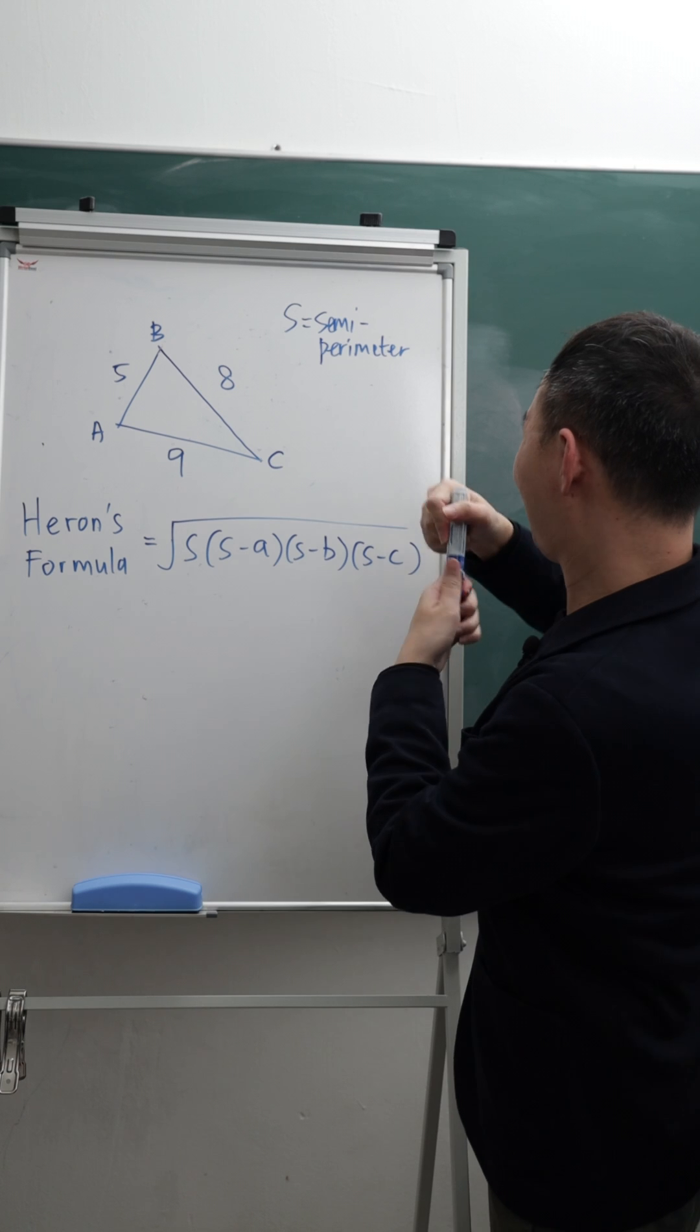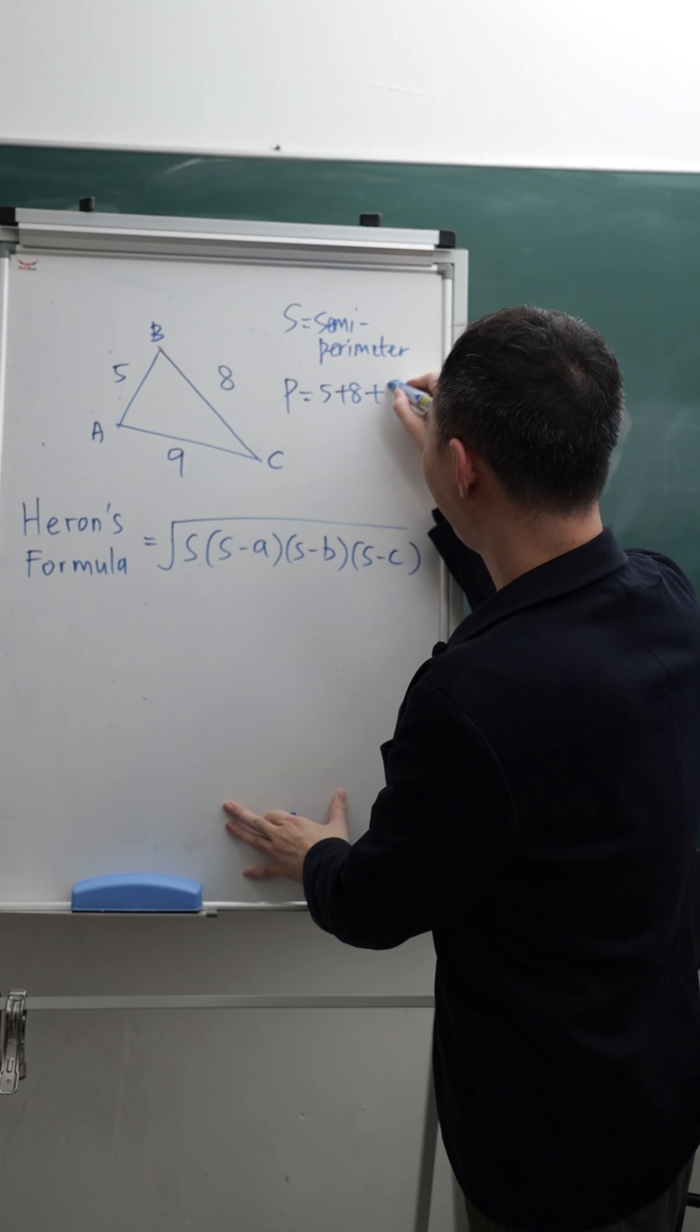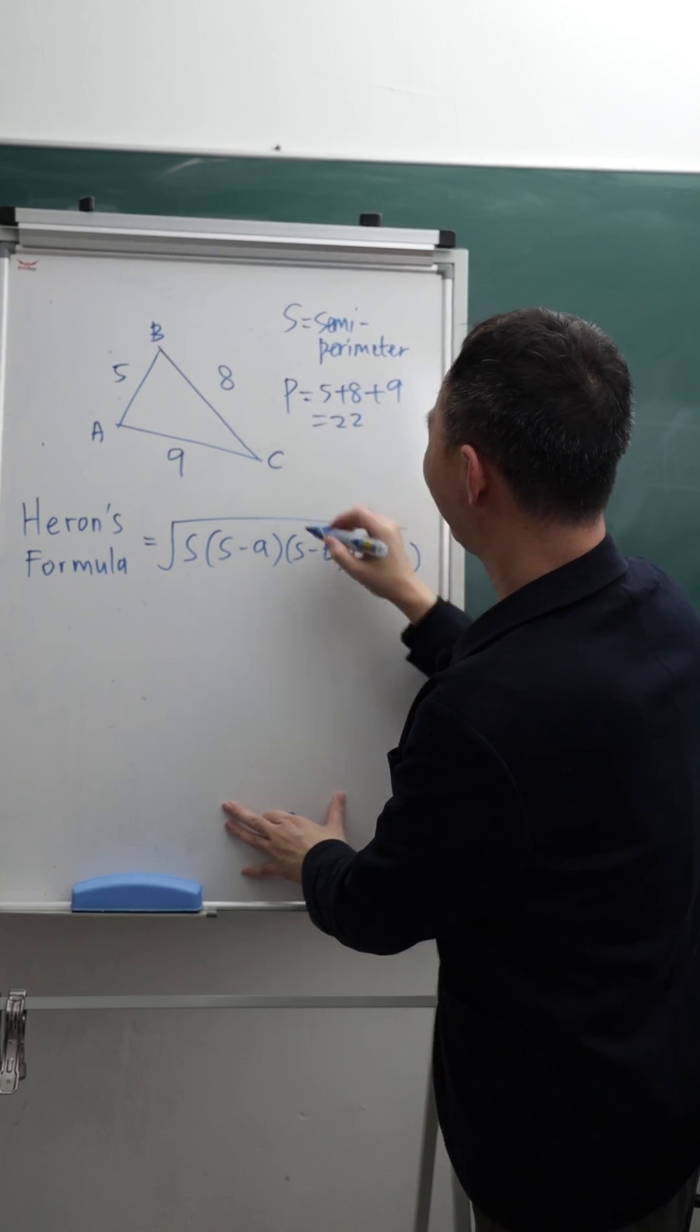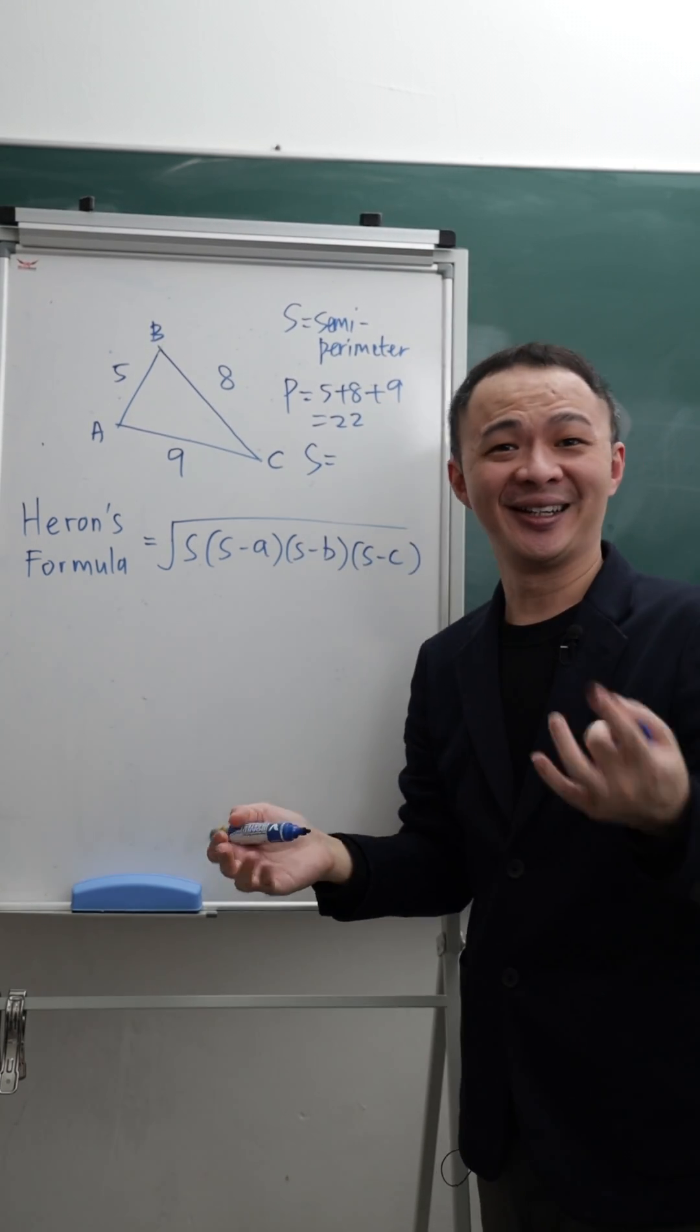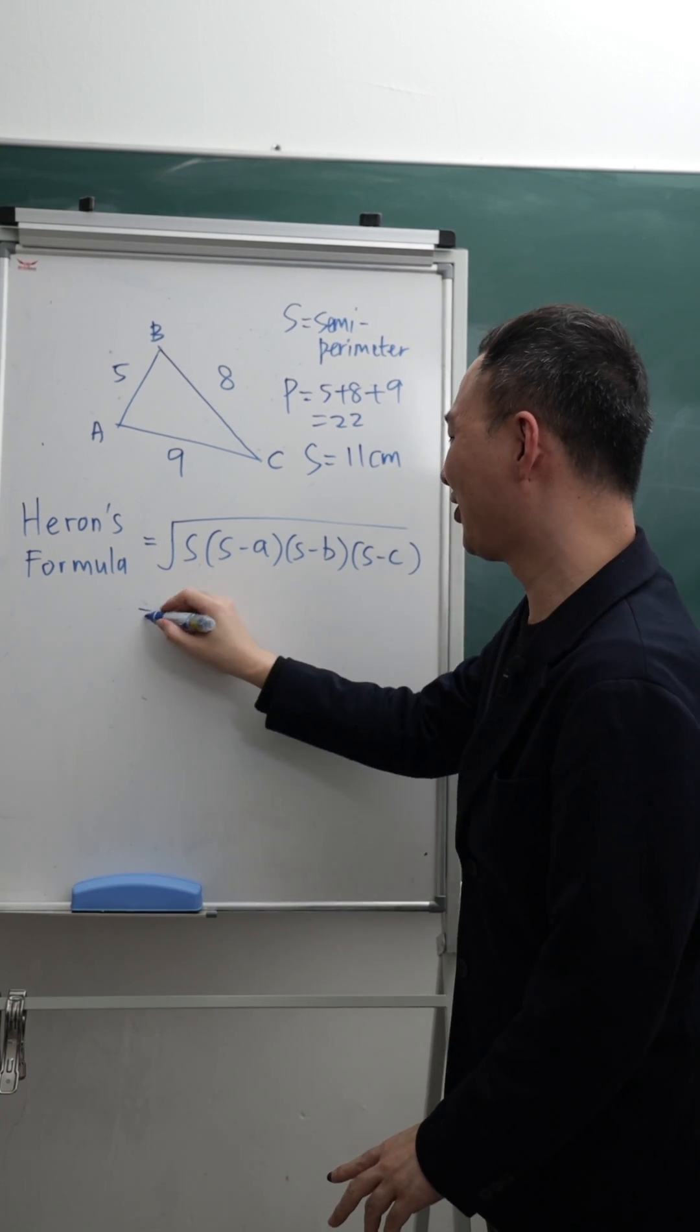All right, so let's try to do the perimeter first. So I will do 5 plus 8 plus 9, I can quickly know this is 22. Then what is half of 22? 11, isn't it? So it's 11 centimeters.